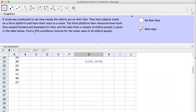A study was conducted to see how steady the elderly are on their feet. They had subjects stand on a force platform and have them react to a noise. The force platform then measured how much they sway forward and backward in millimeters.